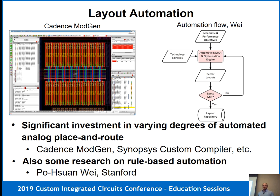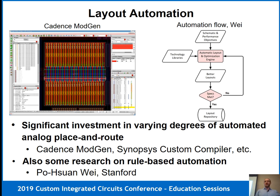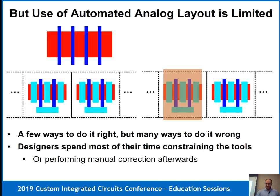One answer is to automate the layout — that's exactly the direction digital designs have gone, and there's been a lot of investment in analog layout automation. You could look at Cadence ModGens, Synopsys Custom Compiler, and academic work on rule-based approaches using digital place-and-route flows constrained for analog layouts. Don't get me wrong — all of these are interesting and have shown reasonably interesting results. But unfortunately, most of these techniques just really aren't used today.